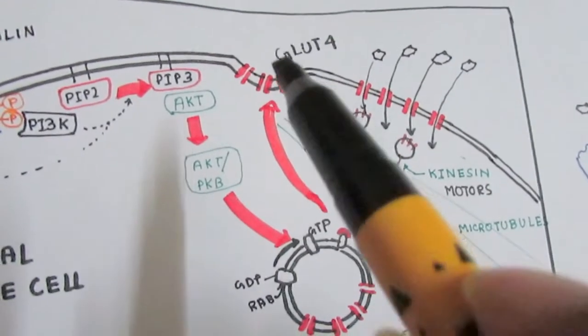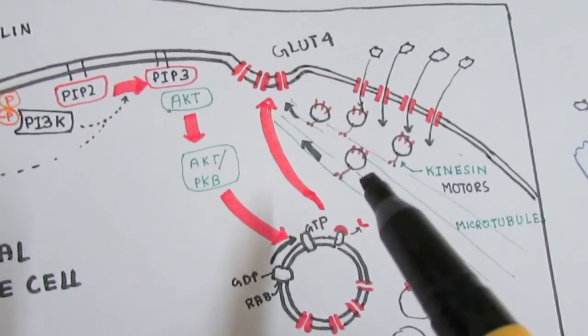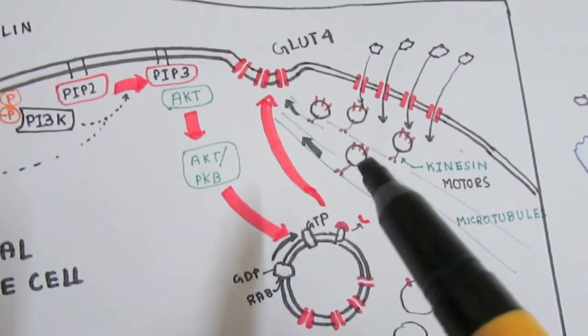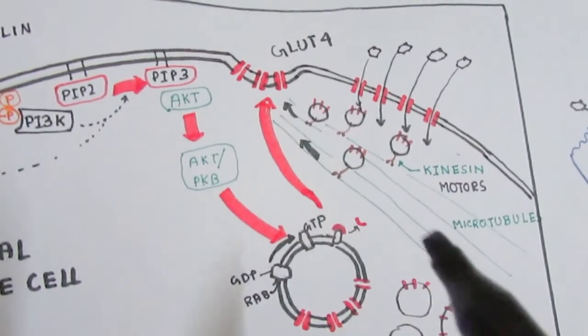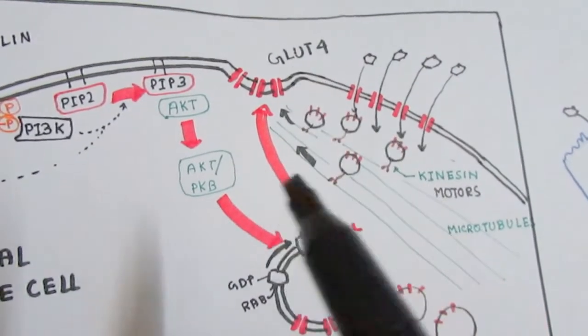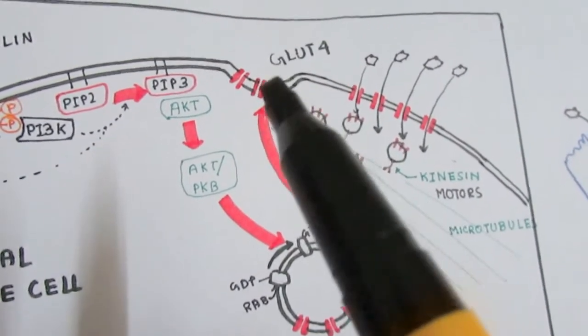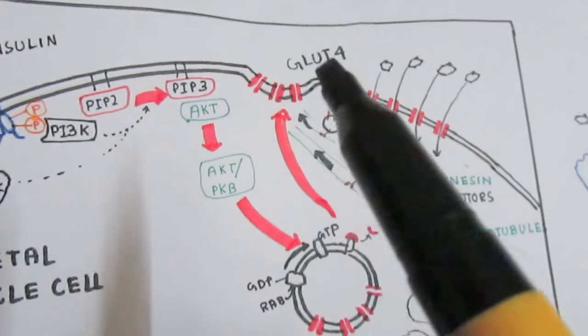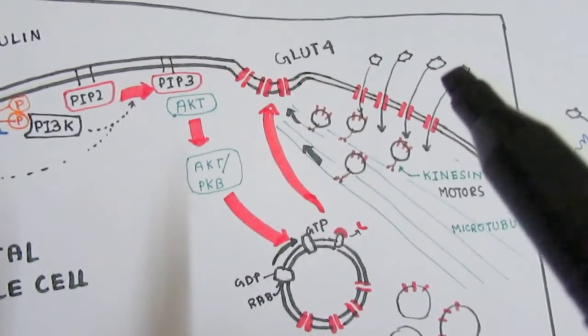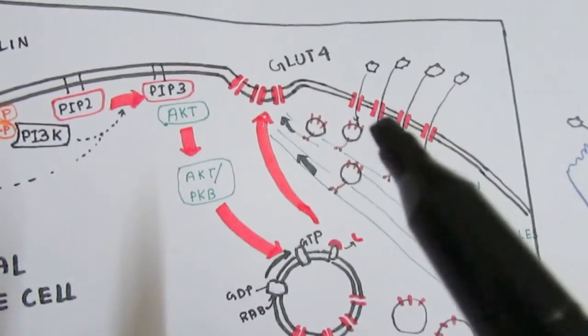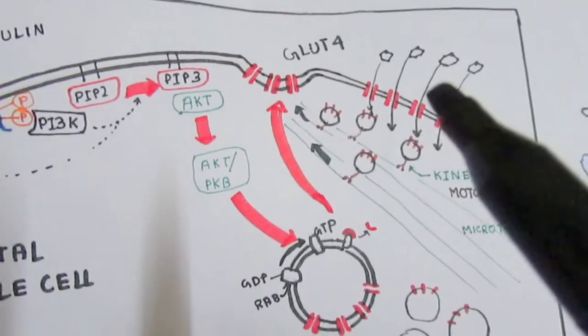The vesicles loaded onto kinesin move on the microtubules—the highways—and ultimately the GLUT4 vesicles fuse into the membrane, allowing more and more glucose uptake by this muscle cell. The muscle cell can utilize this glucose for energy through glycolysis.